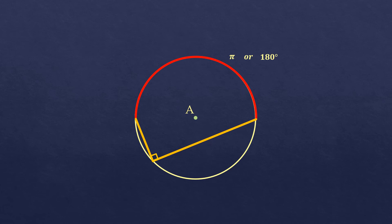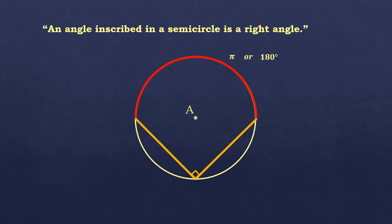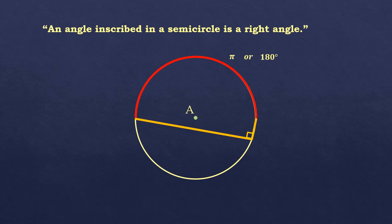This is supported by the theorem: an angle inscribed in a semicircle is a right angle, no matter where you position the vertex, as long as it's intercepting a semicircle.